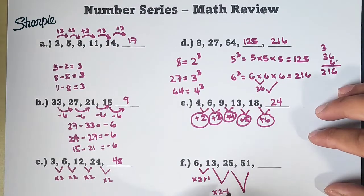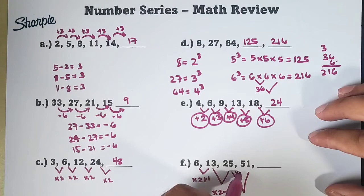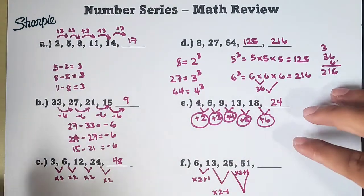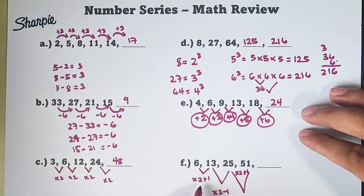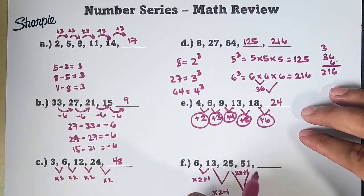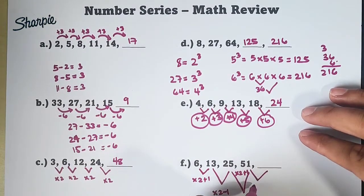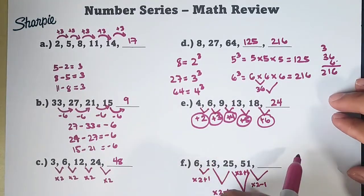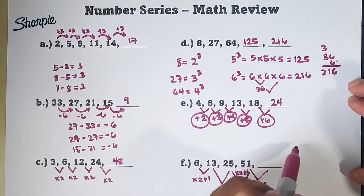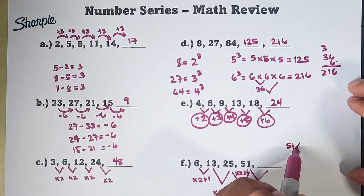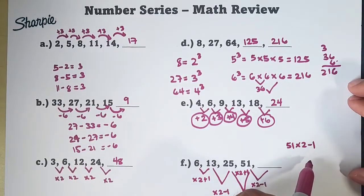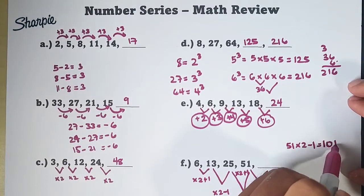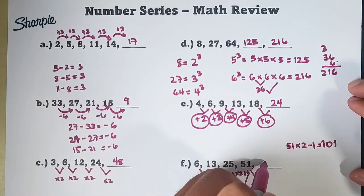Ang pattern natin ngayon dito ay times 2 plus 1. So, mapansin nyo alternate yung pattern natin dito sa unang pair natin times 2 plus 1, times 2 minus 1, times 2 plus 1. Ibig sabihin para makuha natin yung next term natin that is times 2 minus 1. So, mangyayari dito yung 51 natin is times 2 and then minus 1. 51 times 2 is 102 minus 1 that will give us the answer of 101. This is 101.